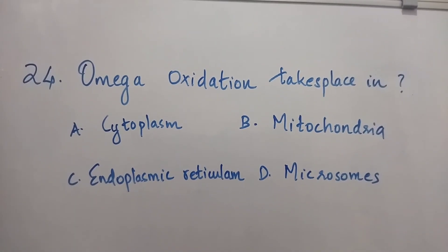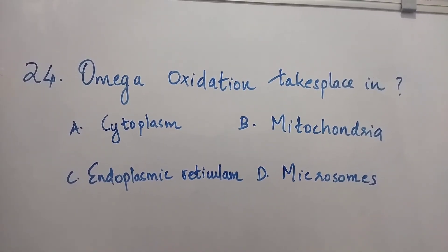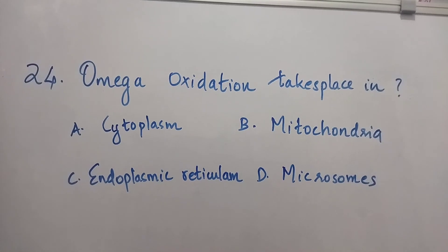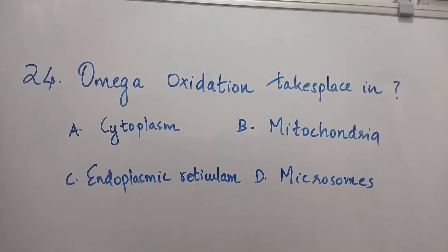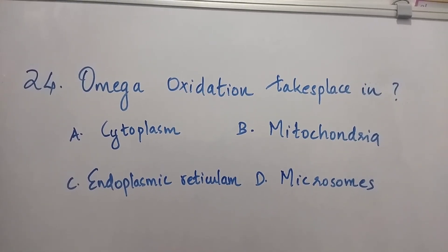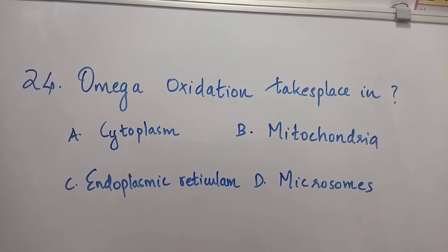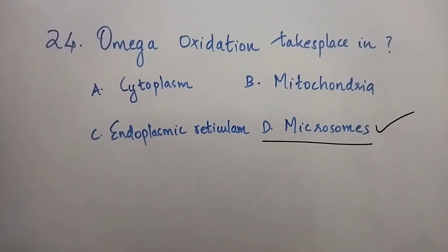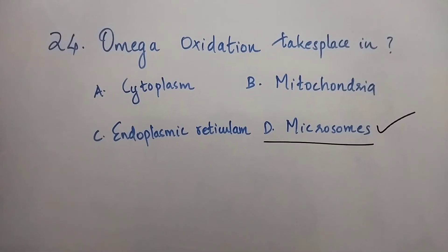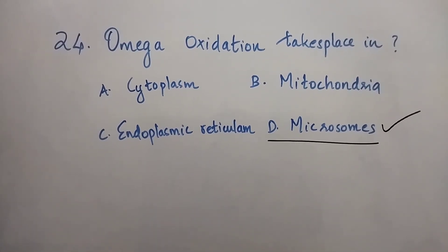Question number 24: Omega oxidation takes place in — Option A: Cytoplasm. Option B: Mitochondria. Option C: Endoplasmic reticulum. Option D: Microsomes. The right answer is Option D, Microsomes. Omega oxidation takes place in microsomes.